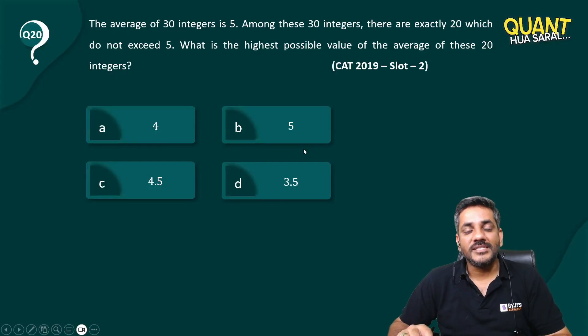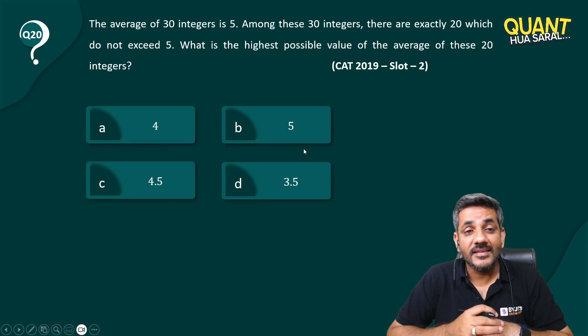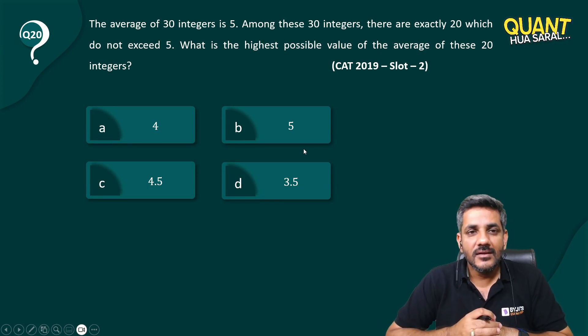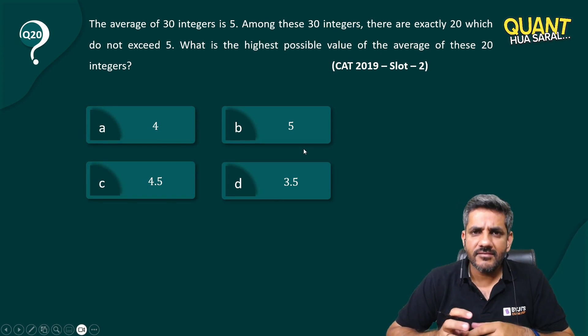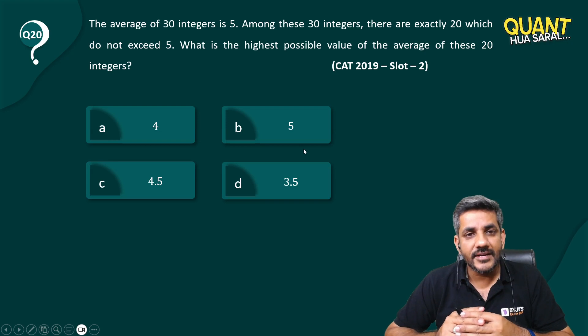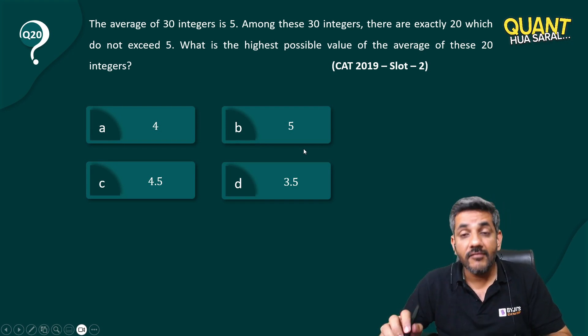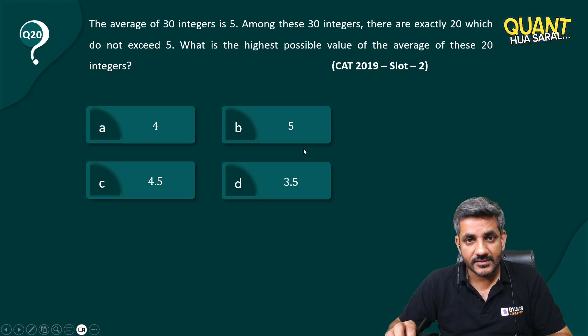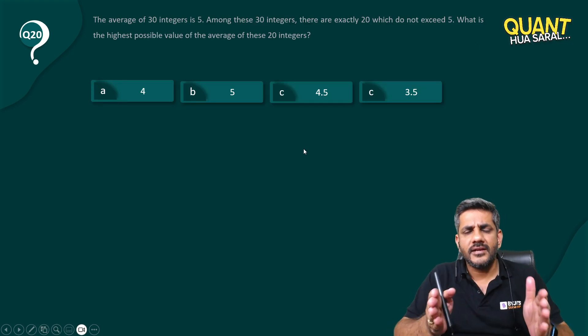Hi, so here we have question number 20 from the series. Now it's a question from CAT 2019 slot 2. The average of 30 integers is 5. Among these 30 integers, there are exactly 20 which do not exceed 5. What is the highest possible value of the average of these 20 integers?